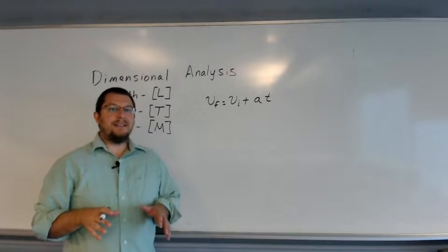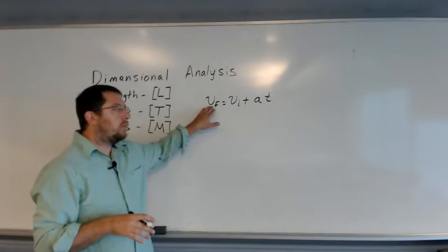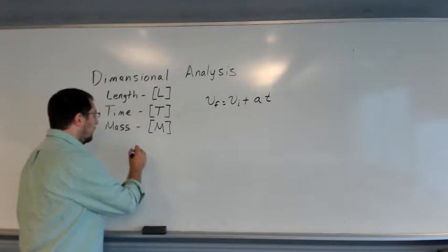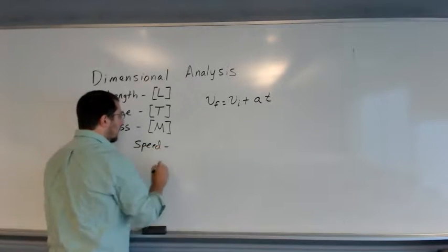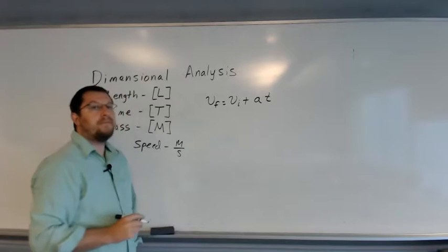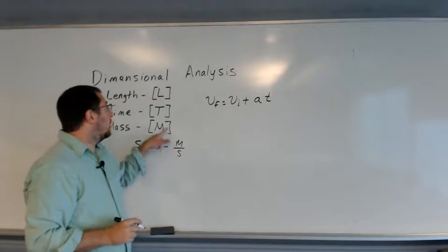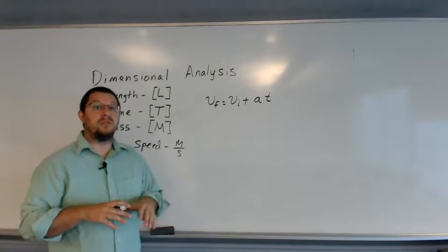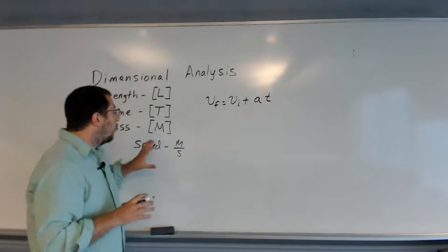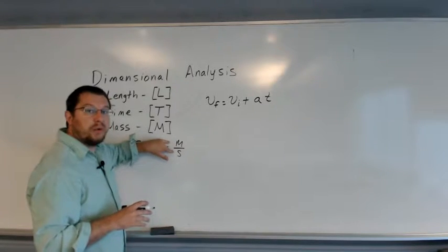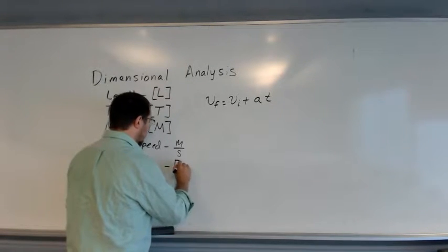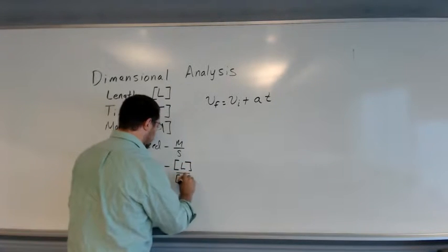Let's dissect this equation a little bit. V we've already defined as velocity or speed, and as we've seen before, speed has the units of distance per time — in the SI system, that is meters per second. Meters is a unit of length and seconds is a unit of time. So generically, whether we define it in meters per second, miles per hour, or kilometers per second, they will always be a length per unit time. So generically, speed will have the units of length per unit time.